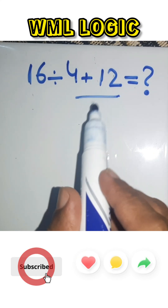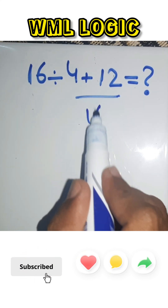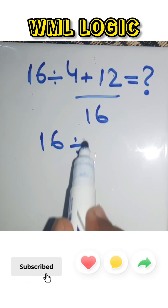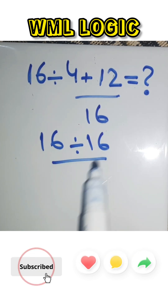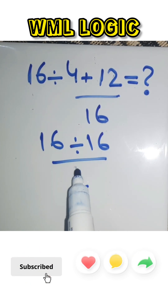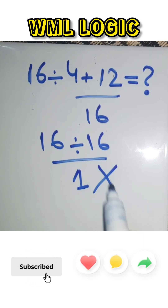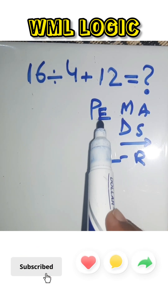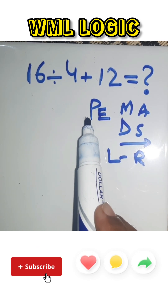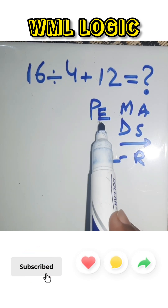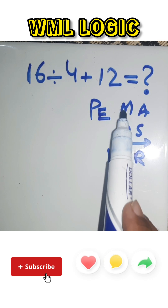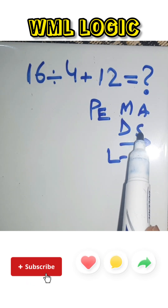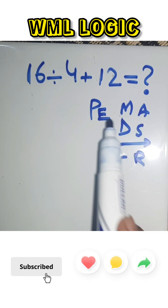4 plus 12 gives us 16, and 16 divided by 16 gives us 1 — but this answer is not correct. According to order of operations, first we solve parentheses, then exponents, then multiplication or division, and the same applies to addition or subtraction. Remember that.